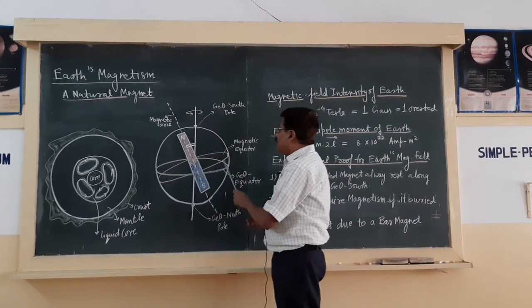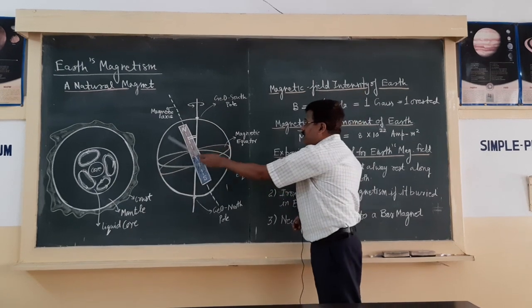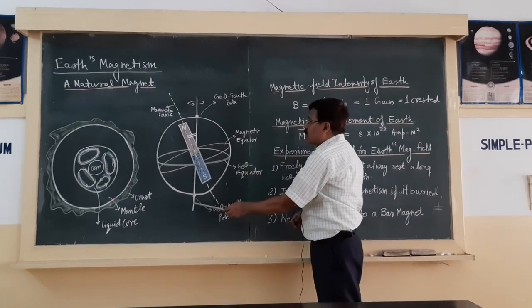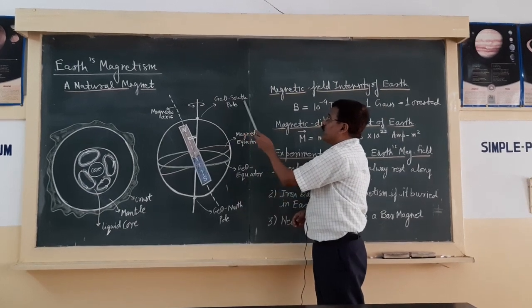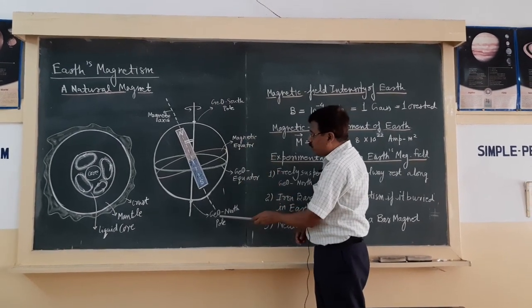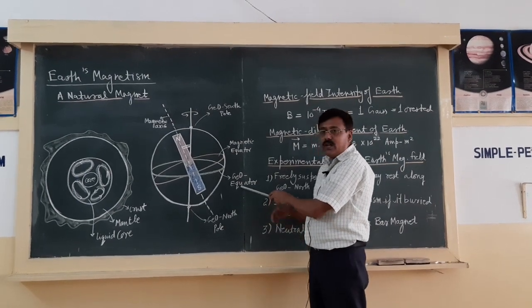Number one. Number two: what is the terminology associated with the earth magnet? This is the earth, this is the axis of rotation of the earth. Our earth rotates about this axis. This is the geographical south pole, this is the geographical north pole, and this is the geographical equator. Already you know in geography.